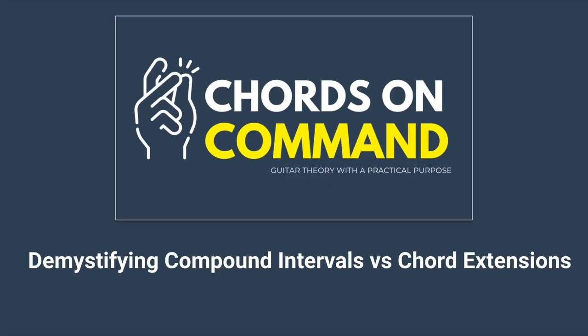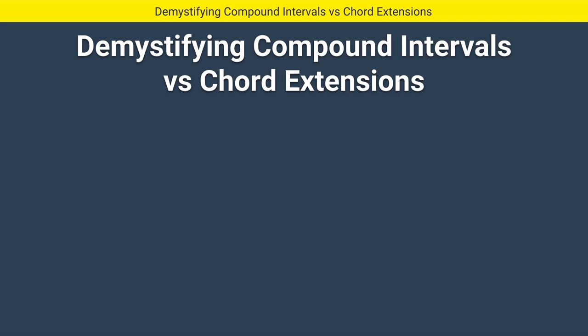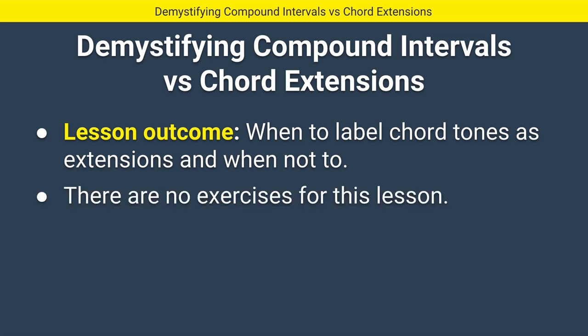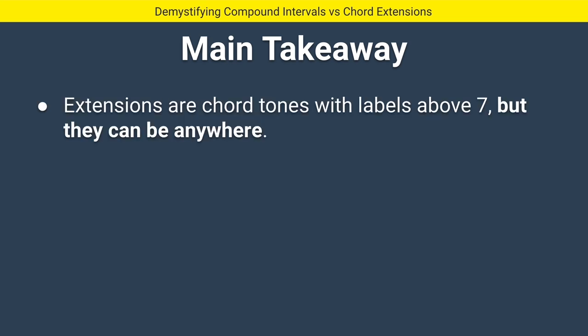Welcome to 'Demystifying Compound Intervals vs. Chord Extensions.' This is going to be a quick lecture with no exercises, just so we can understand some important theory. The lesson outcome: when do we label chord tones as extensions and when do we not? The main takeaway is that extensions are chord tones with labels above seven, but they can be anywhere — a lot of people think an extension like a 13 is just a six an octave up, but that's the compound interval definition, not the chord tone definition.